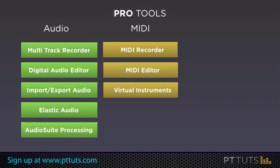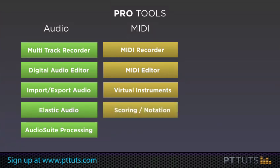Also included in Pro Tools' MIDI functionality is the ability to transcribe your MIDI performances — performances of music using MIDI instruments — as notation, and then edit that notation using the score editor. So another thing you can do with your Pro Tools system is create, edit, and print musical notation. Let's go over to Pro Tools and take a look at some of these MIDI features in action.